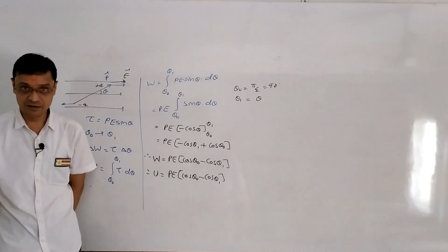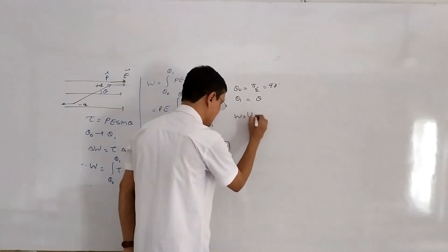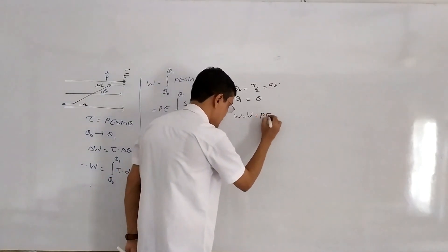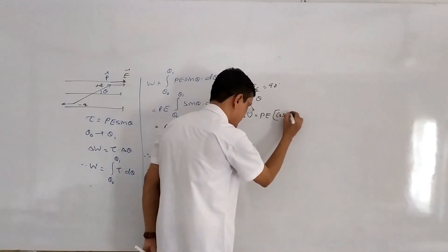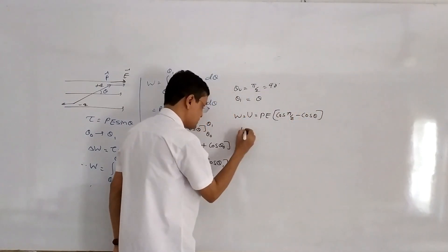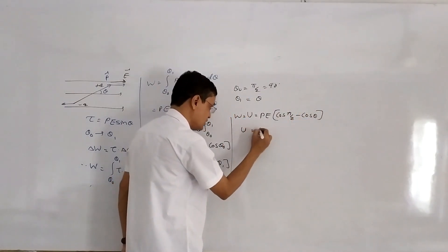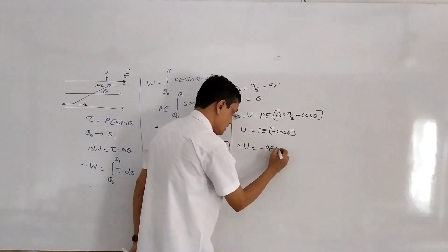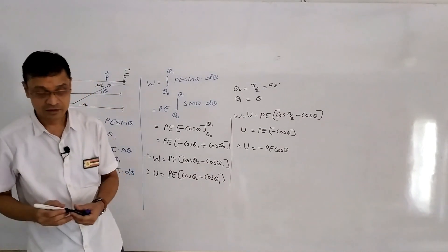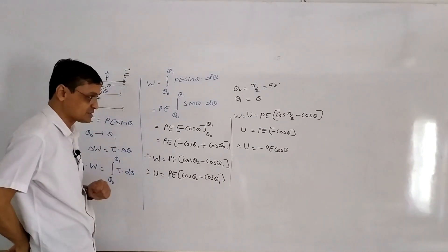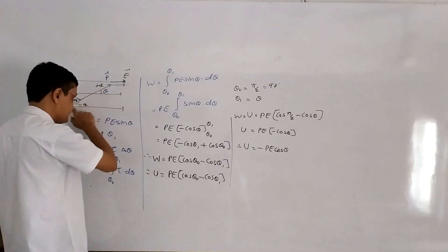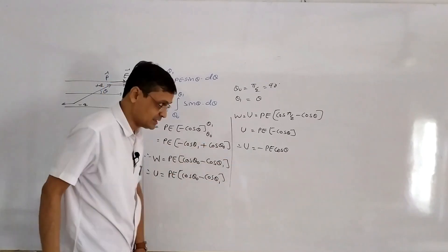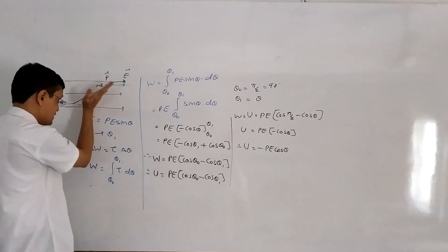With initial angle 90° and final angle theta: U = PE (cos(pi/2) minus cos theta). Since cos(pi/2) equals 0, we get U = PE(minus cos theta), and therefore the potential energy of an electric dipole in a uniform electric field is U = minus PE cos theta. The angle theta is measured between the dipole and the electric field.